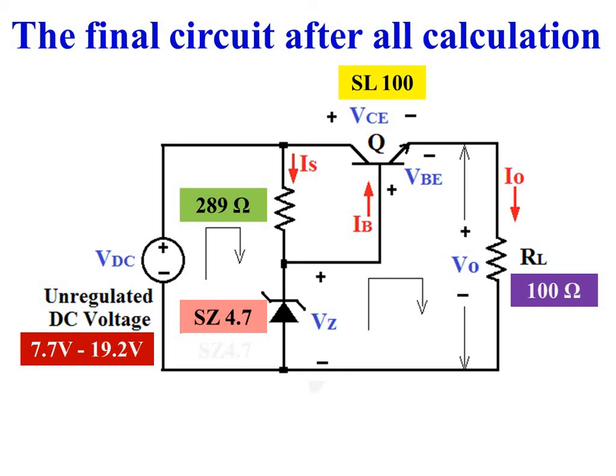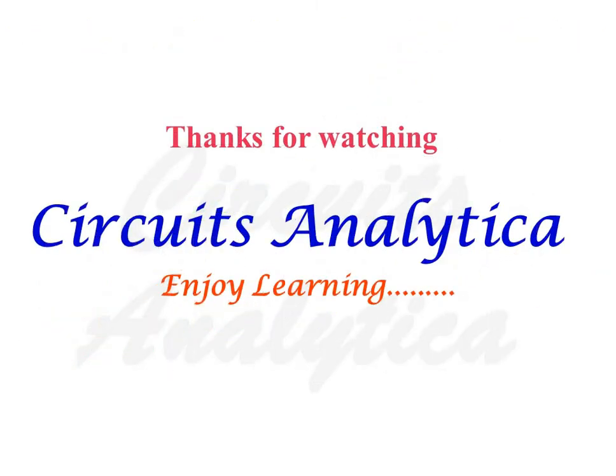This is the final circuit. The unregulated DC voltage must be between 7.7V and 19.2V. If the unregulated DC voltage goes below 7.7V, the Zener diode may come out of conduction. If it exceeds 19.2V, the Zener diode may get damaged. The Zener diode selected is SZ 4.7V, the series resistance RS equals 289 Ohms, and the NPN transistor selected is SL100. Thanks for watching Circuits Analytica — enjoy learning!